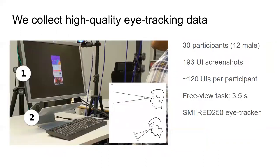Since China has the largest mobile ecosystem in the world, we recruited 30 Chinese participants. We collected a dataset comprising 193 UI screenshots from different Android and iOS vendors. The task was previewing each UI for 3.5 seconds. We used a stationary eye tracker with a 250 Hz sampling rate and an accuracy of 0.4 degrees. We corrected for screen distance and screenshot size.